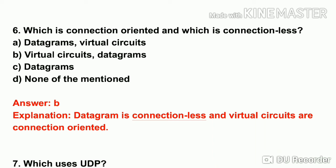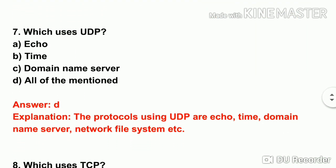The next question: which uses UDP? UDP stands for User Datagram Protocol. The four options are ECO, Domain Name Server, all of the mentioned. The answer is all of the mentioned — all those services use User Datagram Protocol.